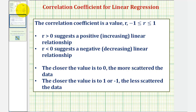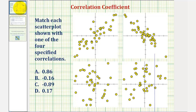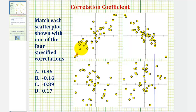Going back to our four scatterplots, it's pretty easy to see that the top two scatterplots are less scattered, and therefore the correlation coefficients would be closer to either negative one or positive one. Let's sketch a line over each scatterplot to represent the data. For this first scatterplot, the line might look something like this, and the line for this second scatterplot might look something like this.